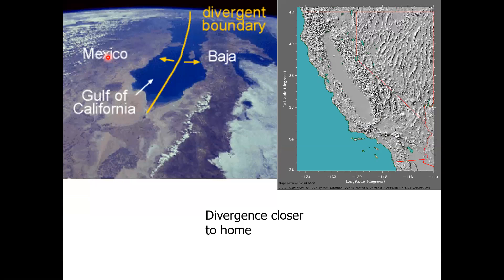A little closer to home, we have the Gulf of California. There's a mid-ocean ridge underneath it, and the gulf has formed as volcanic activity started in Mexico. That peninsula — Baja California — used to be part of mainland Mexico. The volcanic activity, just like in the Red Sea and the Rift Valley of Africa, caused it to split apart. That stretching is being felt in parts of the western U.S. in the area we call the Basin and Range.